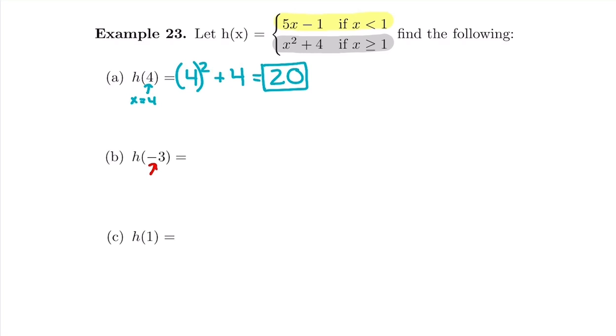The next x we want to plug in is negative 3. We need to figure out which piece to plug it into. Is negative 3 less than 1, or is it equal to or bigger than 1? Well, negative 3 is definitely less than 1, so we're going to plug into the top piece. We're going to replace that x with a negative 3 in parentheses: 5 times negative 3, which gives us negative 15 minus 1 equals negative 16.